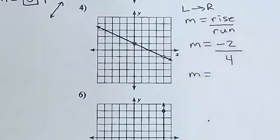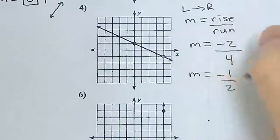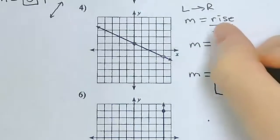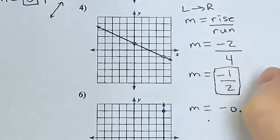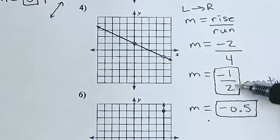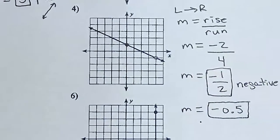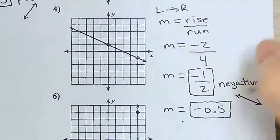Now, what's negative 2 divided by 4? This is a negative fraction, but I can simplify it by dividing top and bottom by 2, giving me negative 1 over 2. Negative one-half is my slope. I can also write this as the decimal negative 0.5. Notice that this line has a negative slope, which means as the graph goes to the right, it's going to go down.